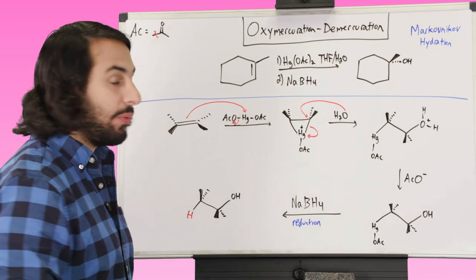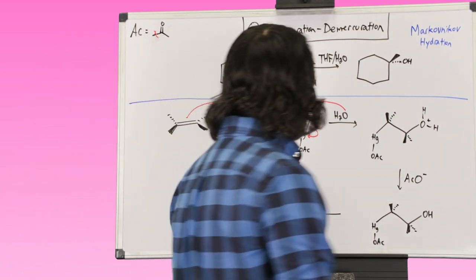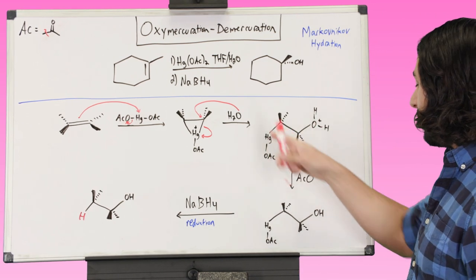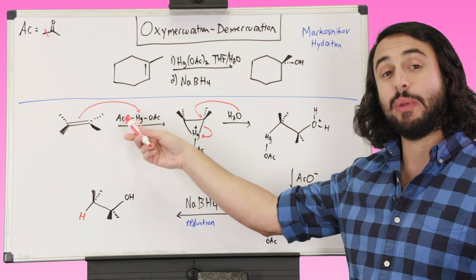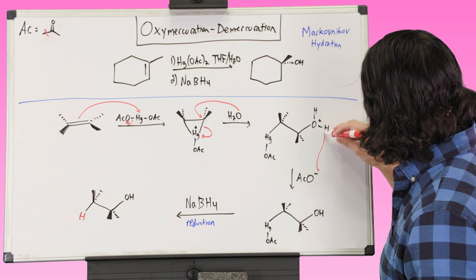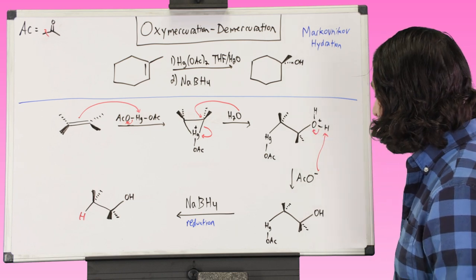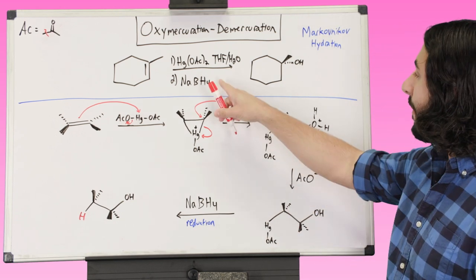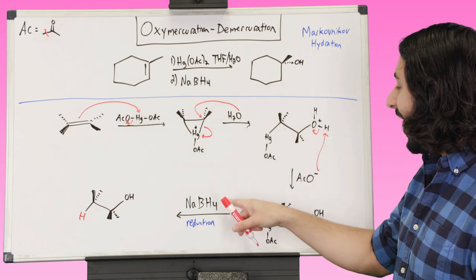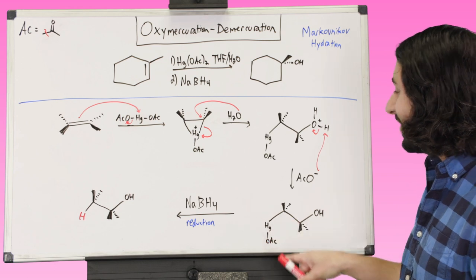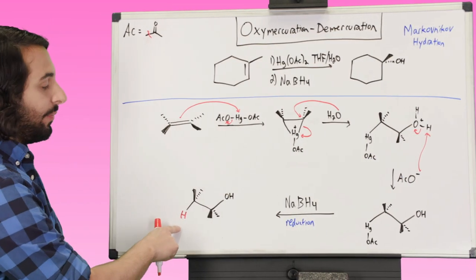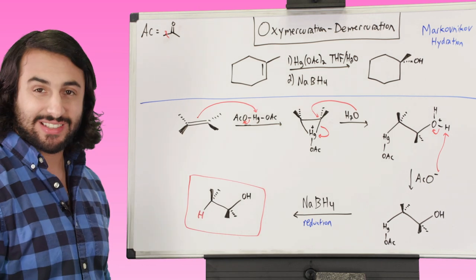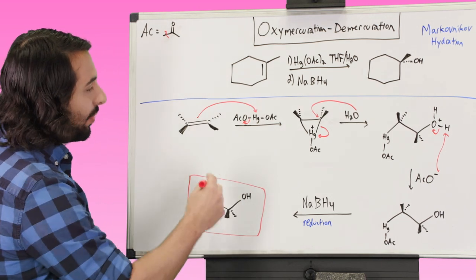Now we can have water pop this open, just like with halohydrin formation. We kick open the mercurinium ion intermediate. We put water on the molecule, and then another molecule of water — or the acetate ion we kicked off — is going to go ahead and get that proton and neutralize that oxygen atom. So we've put that OH on there. Then the second step is a reduction: sodium borohydride is going to kick off the mercury and give us the proton there. So we've got H and OH — that's why this is a hydration. That's the mechanism.